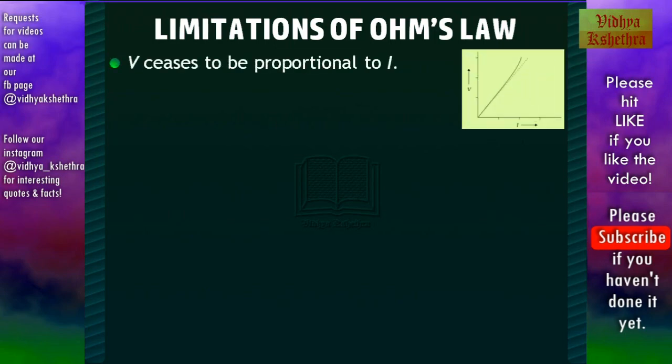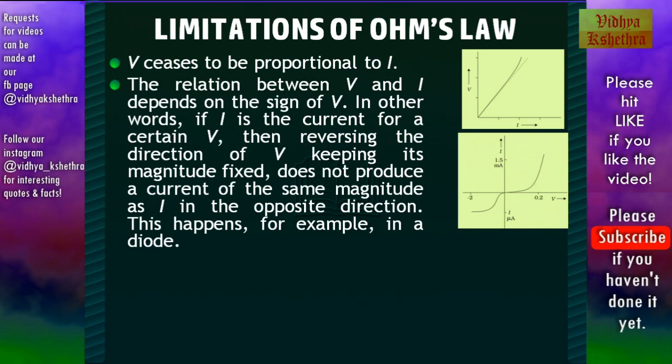Now we can see the limitations of Ohm's law. The first limitation is that V ceases to be proportional to I at higher values of I. Then second is that the relation between V and I depends on the sign of V. In other words, if I is the current for a certain V, then reversing the direction of V, keeping its magnitude fixed, does not produce a current of the same magnitude as I in the opposite direction. This happens, for example, in a diode.